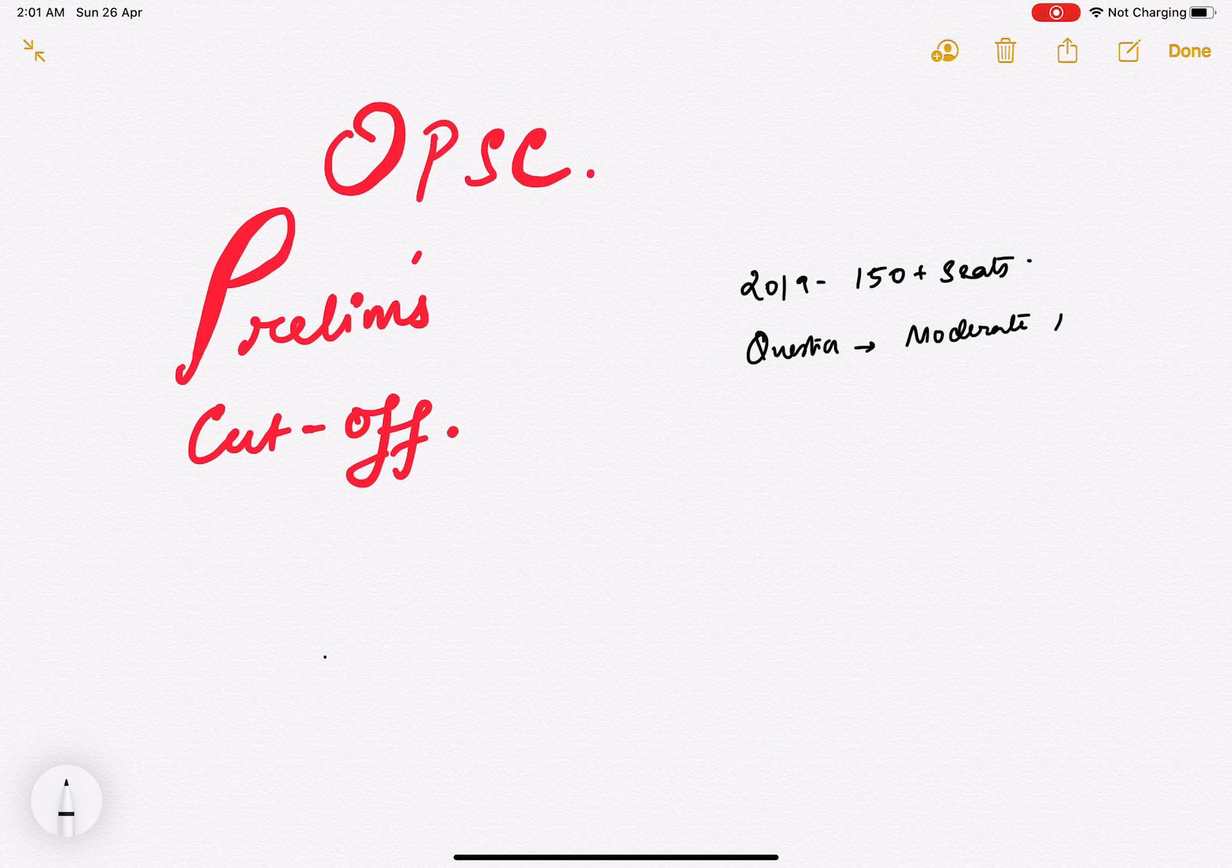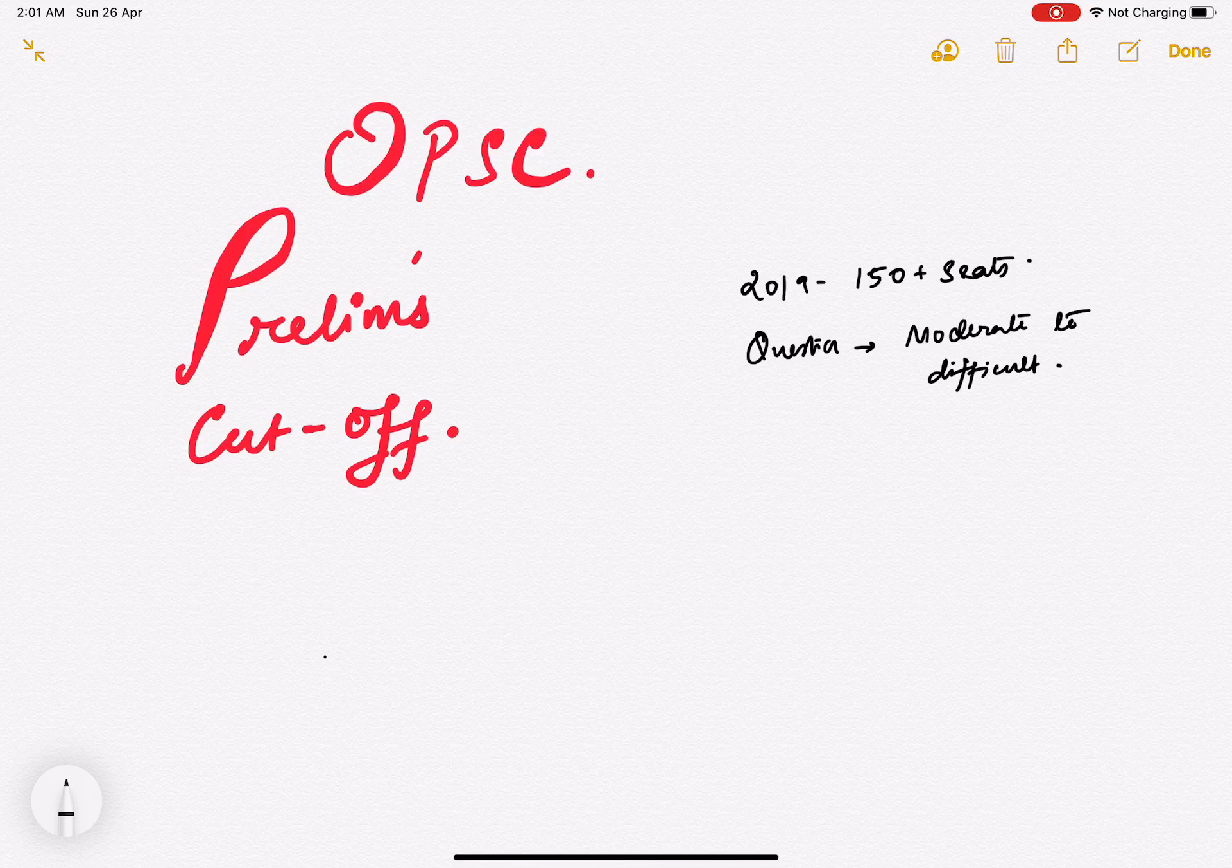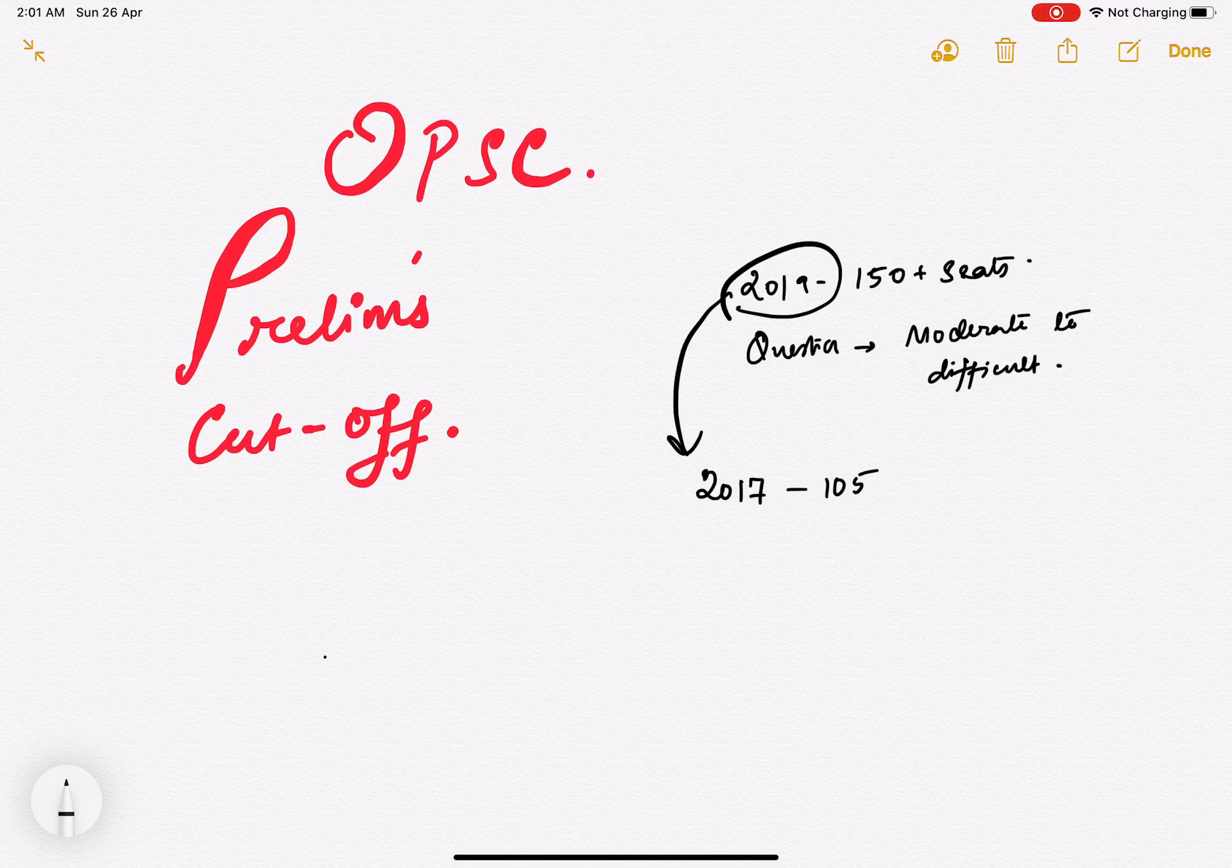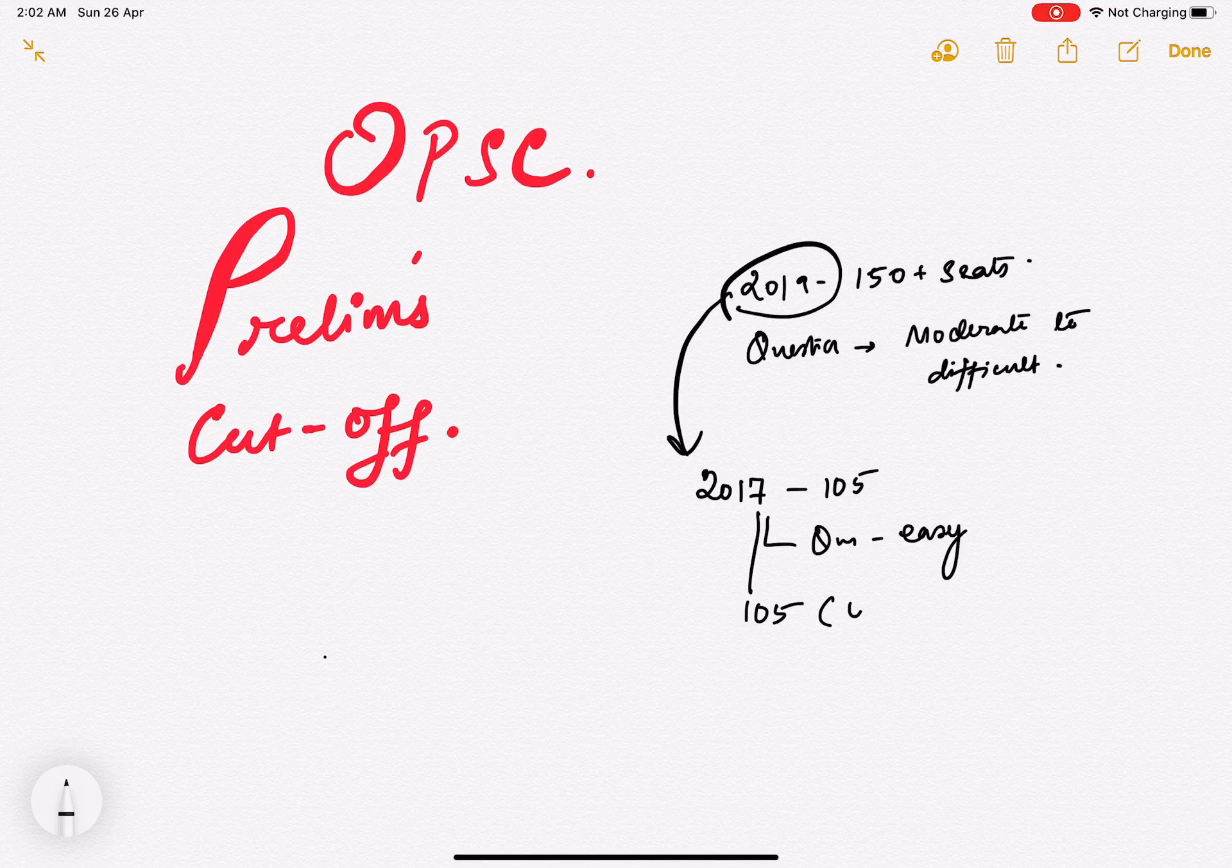Now in this context, what would be the cutoff? Let's compare this 2019 with 2017. In 2017 there were only 105 seats and the questions were easy, I would say.